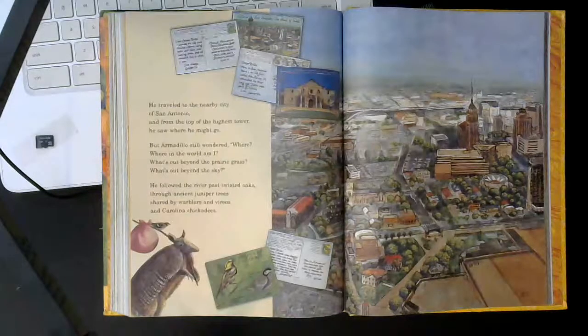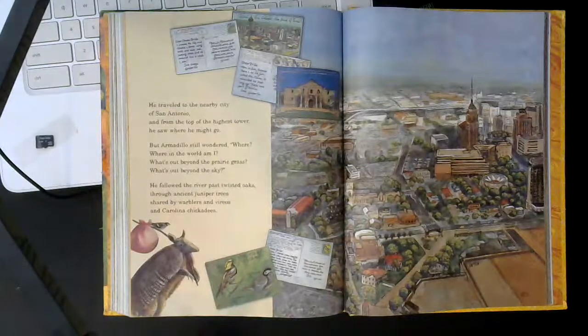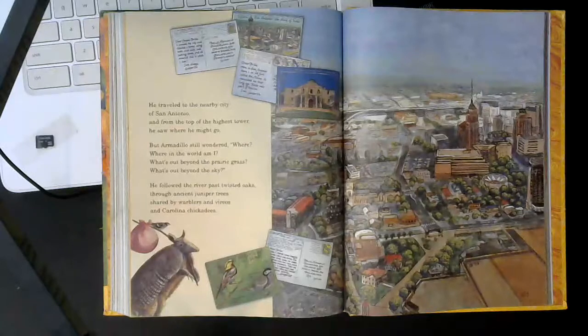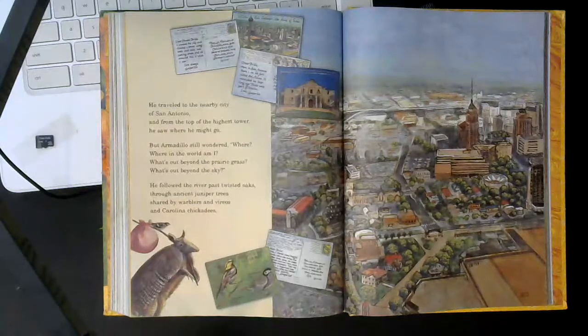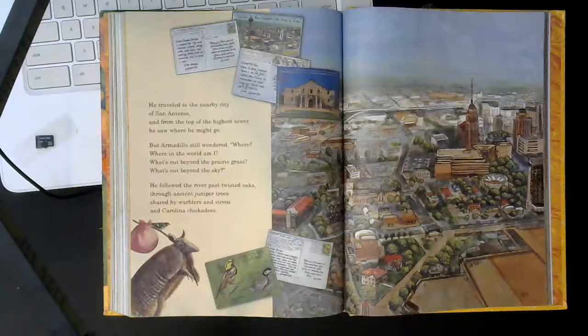But Armadillo still wondered, where? Where in the world am I? What's out beyond the prairie grass? What's out beyond that sky? He followed the river past twisted oaks, through ancient juniper trees shared by warblers and vireos, and Carolina chickadees.